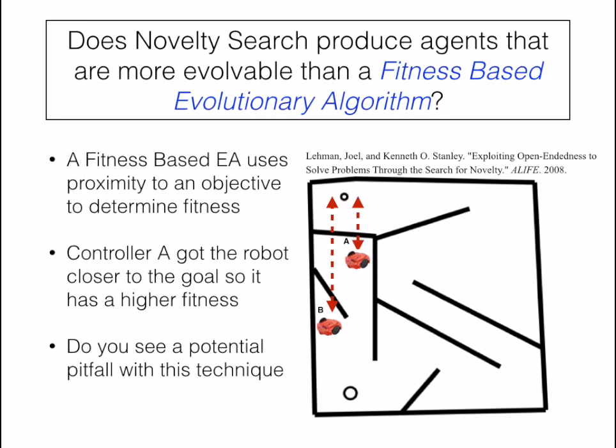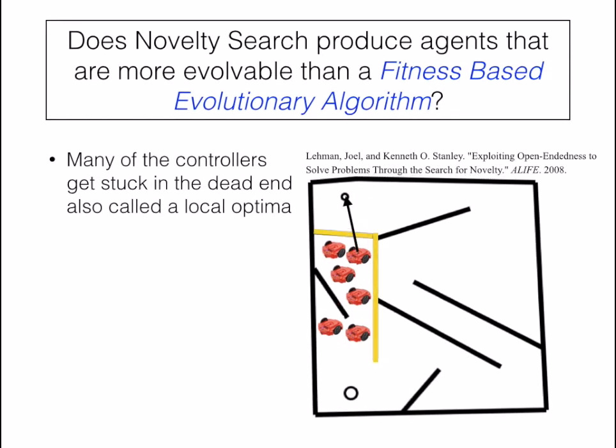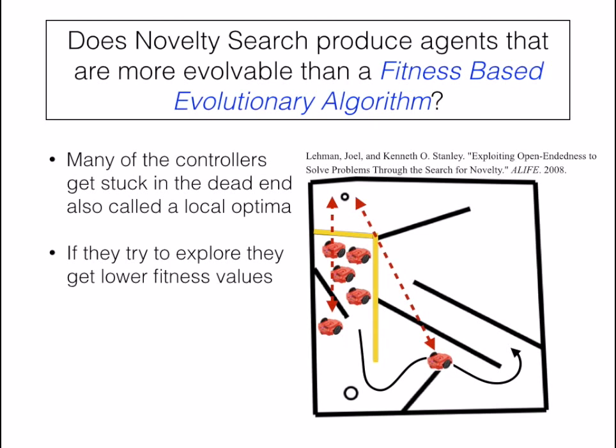Now, do you see any potential pitfalls with this technique and in this maze? Many of the controllers wind up getting stuck in the dead end just below the goal — this is called a local optimum. This happens because all the controllers are preoccupied with getting close to the goal, so they keep going up and up even though they hit the wall. If they just explored a little bit, they might actually find a path to the finish line, but in exploring that path, they risk getting lower fitness and therefore getting killed off.